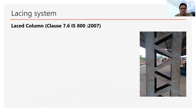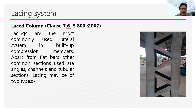All the specifications related to the lacing system are given in clause 7.6 of IS800. Lacing systems are basically the most commonly used lateral system in built-up compression members — the most common system used to connect the main components of the built-up column.